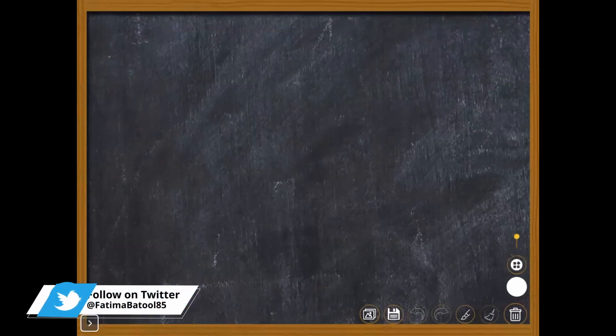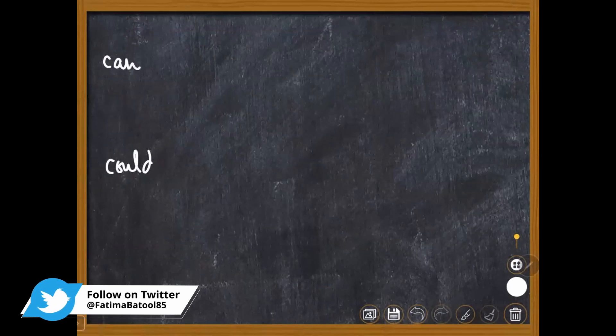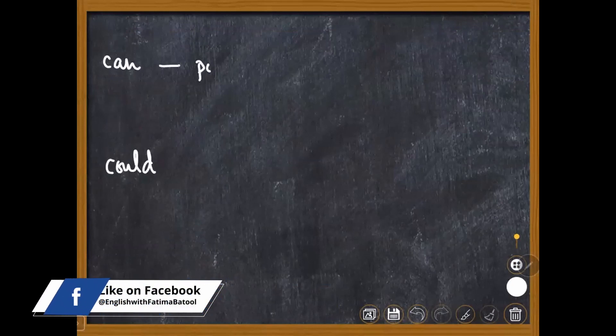Can and could. When we talk about can, can means that something is possible. This is a possibility. So if something is possible, we say can.